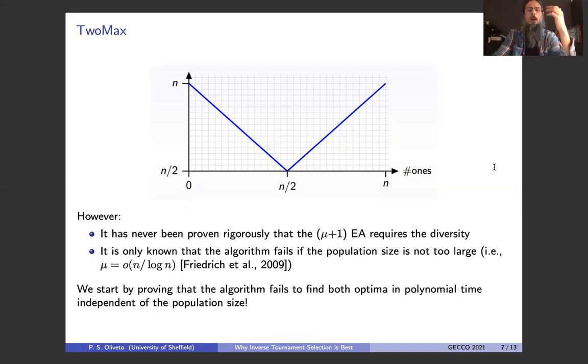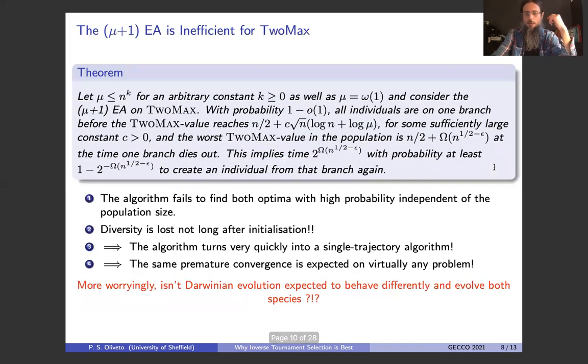So one argument could be, well, if you increase the population size, can you find both optima? The first thing we prove in the paper is that you can't, steady state EAs will fail with high probability at identifying both optima, independent of the population size. So this is what this ugly theorem here is saying. We will not look at it. I will summarize what the theorem says, and point one is that the algorithm fails to find both optima with high probability, whatever polynomially large population size you use. But the big insight comes from the proof where we show that diversity is lost very quickly, not long after initialization.